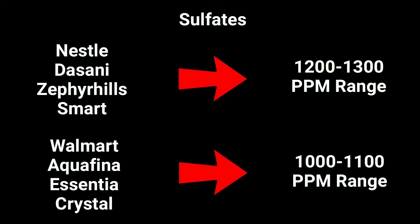When testing for sulfates, Nestle, Dizani, Zephyr Hills, and Smart came in between 1,200 and 1,300 parts per million. Walmart, Aquafina, Essentia, and Crystal came in slightly lower, between 1,000 and 1,100 parts per million. If you don't want any sulfates in your water, you're definitely going to want to choose either Evian, that came in at 20, extremely low, or Fiji at 50 parts per million.